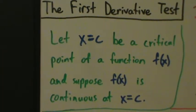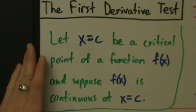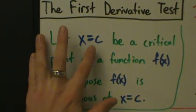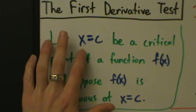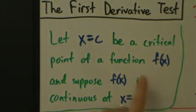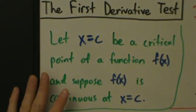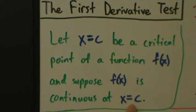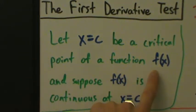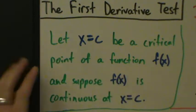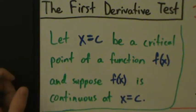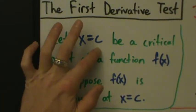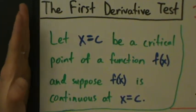Here's the setup. Let x equals c be a critical point of a function f of x. So we have some number c — just some x value — and it's a critical point of f of x. Suppose f of x is continuous at x equals c. Remember, a critical point is a place where the derivative is zero or undefined, so f prime of c is zero or f prime of c is undefined.